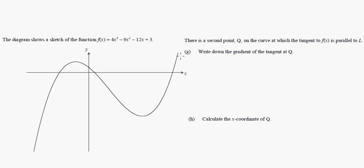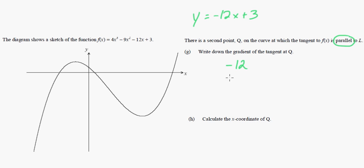There's a second point Q on the curve at which the tangent to f(x) is parallel to L. When they say parallel, you should know the gradients are the same. Write down the gradient of the tangent at Q — it's going to be negative 12, because that's what we just found from y equals negative 12x plus 3.